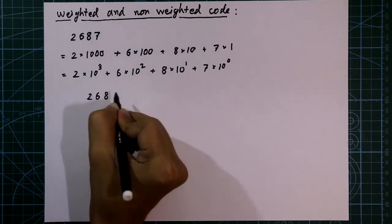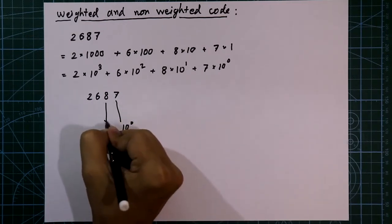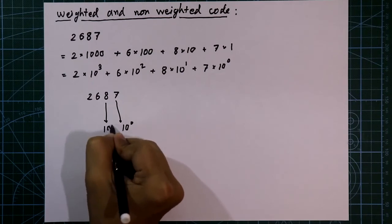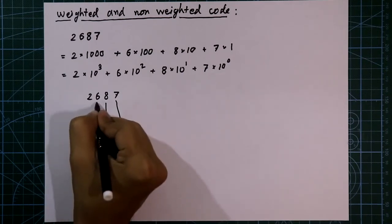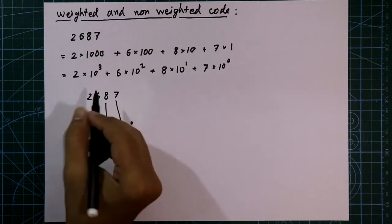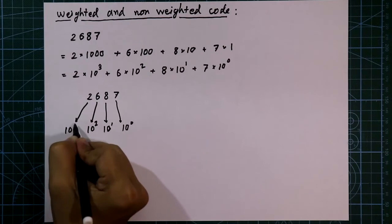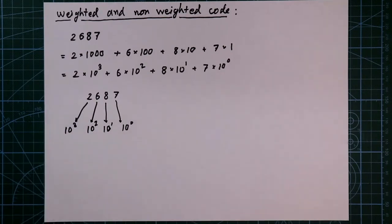Now see this number. Here, this position has weightage of 10 to the power 0. This position has weightage of 10 to the power 1. This position has weightage of 10 square. And this position has a weightage of 10 to the power 3. So the decimal number system is weighted code.